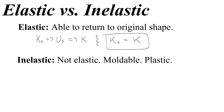In an inelastic collision, we start with kinetic energy, but instead of all of it being turned into potential energy, it's turned into some potential energy and then heat, or thermal energy — something we can't get back. It's non-mechanical. Because of this, we cannot say that the kinetic energy in the beginning will be equal to the kinetic energy at the end.